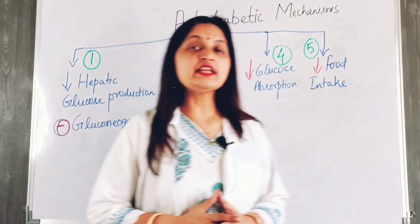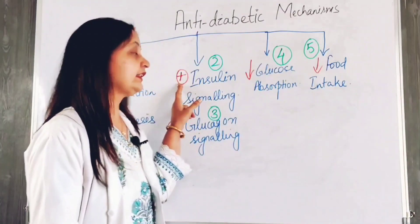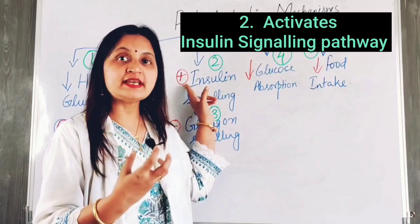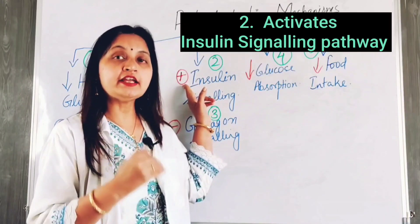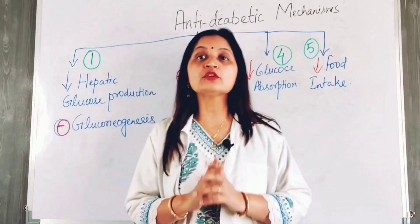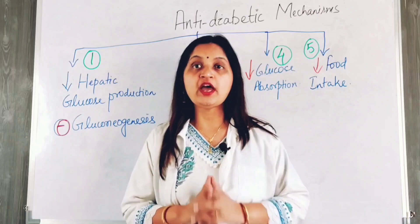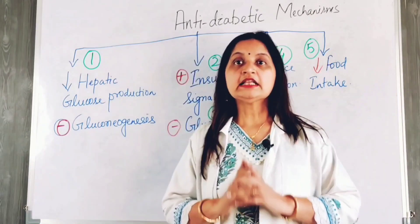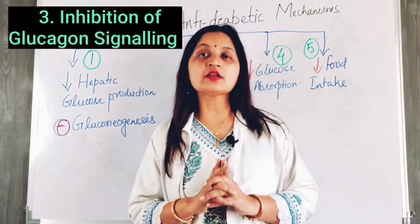The second mechanism is activation of the insulin signaling pathway. By increasing the expression of insulin receptors and tyrosine kinase activity, insulin activity is increased. This helps in glucose utilization by muscle and adipose tissue and also inhibits gluconeogenesis in the liver.